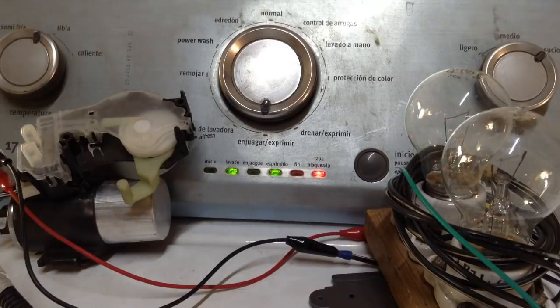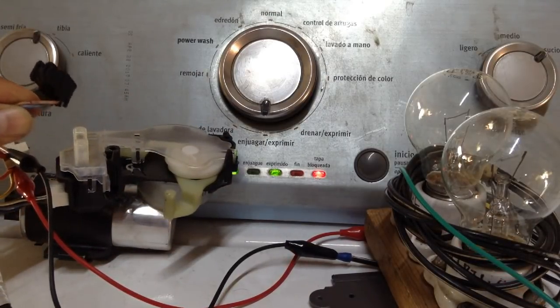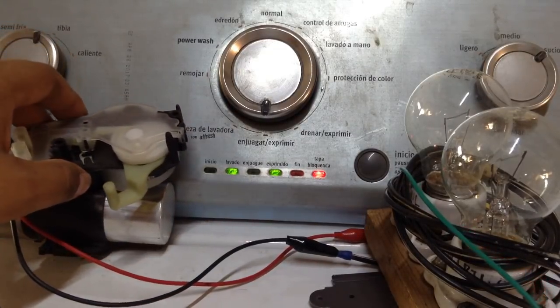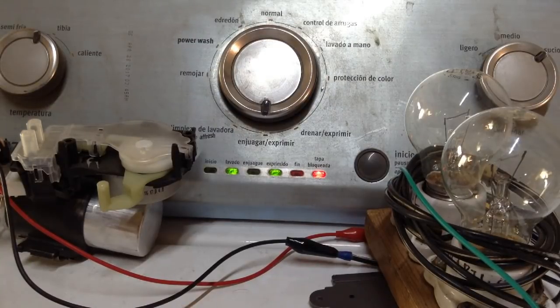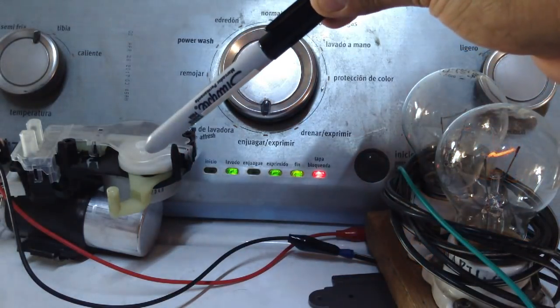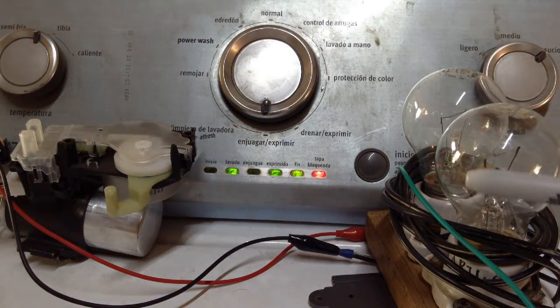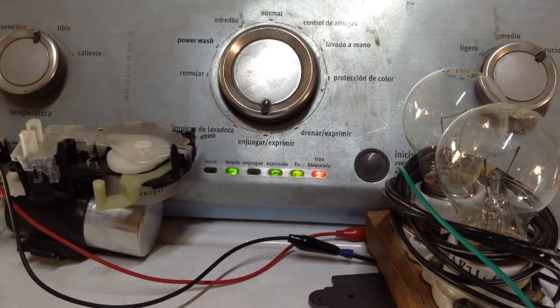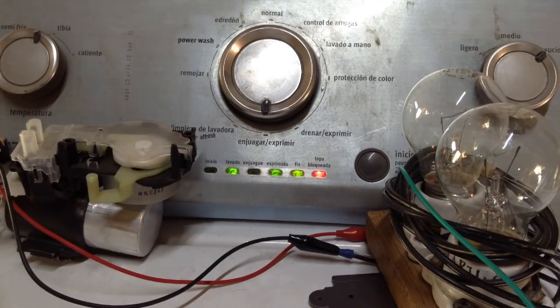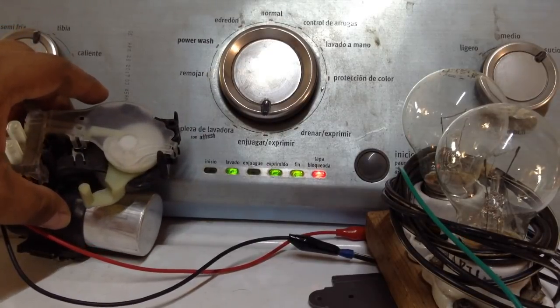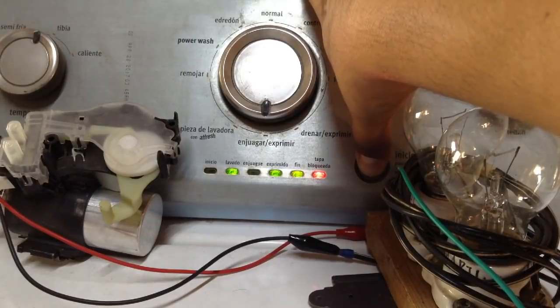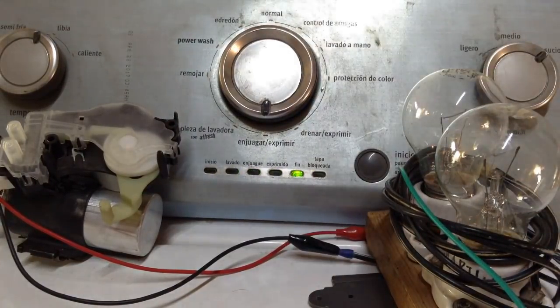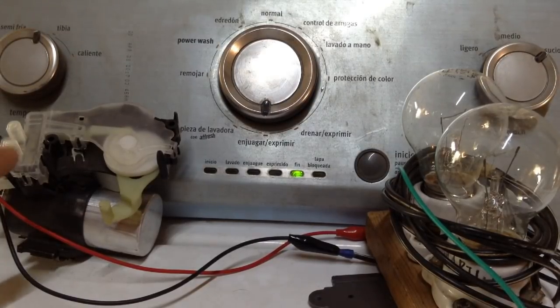Aquí no tenemos conectada la bomba. Nos faltó conectar aquí un foco que nos indicara la bomba. Pero quiero saber qué procede, qué es lo que va a hacer aquí a continuación. Se supone que debe de entrar el shifter en otra función para que entre el exprimido. Es decir, se tiene que retraer el actuador hasta el final.